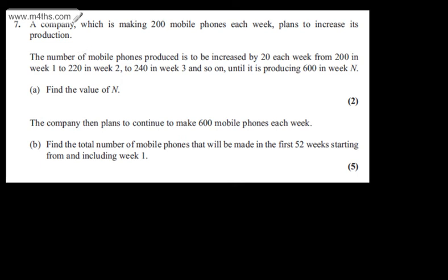This is question 7. We're told a company which is making 200 mobile phones each week plans to increase its production. The number of mobile phones produced is to be increased by 20 each week from 200 in week 1 to 220 in week 2 to 240 in week 3 and so on until it's producing 600 in week N. In part A we're asked to find the value of N.